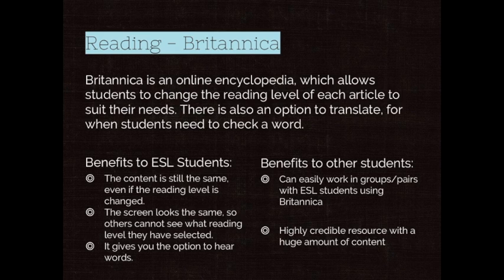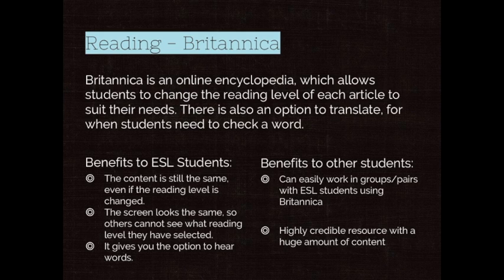One tool that I really like is Britannica — it's a well-known encyclopaedia with articles relevant to all subjects and topics. In the middle school, high school, or primary school platform, you can be looking at an article and change the reading level while the appearance stays the same. So if a high school student wants an easier reading level, students around them don't need to know — it doesn't look babyish, it's the same content just in easier vocabulary. Students can also hear words out loud, and if stuck they can translate words using the built-in Google Translate tool.